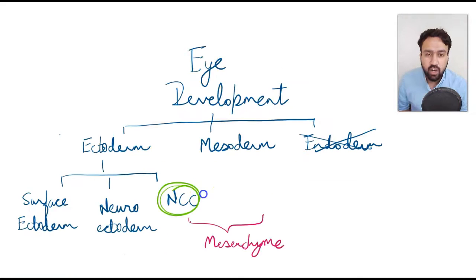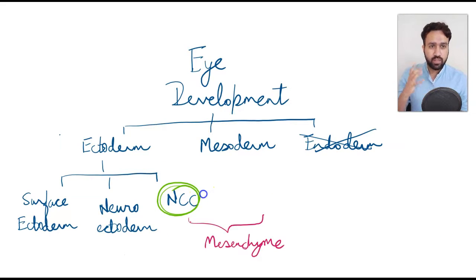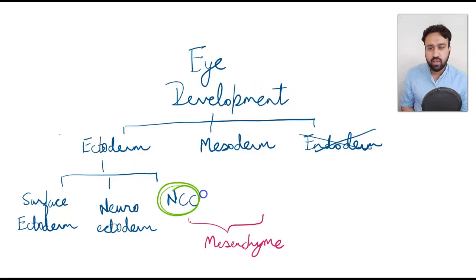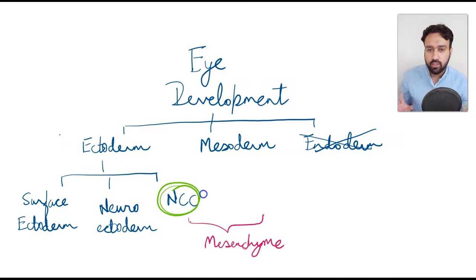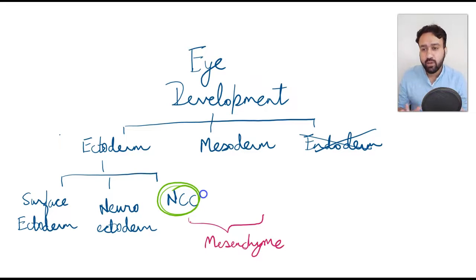In human embryology, we have three germ layers: the ectoderm, mesoderm, and endoderm. For ophthalmology, there is no contribution of the endoderm at all. So that's one less thing to worry about.